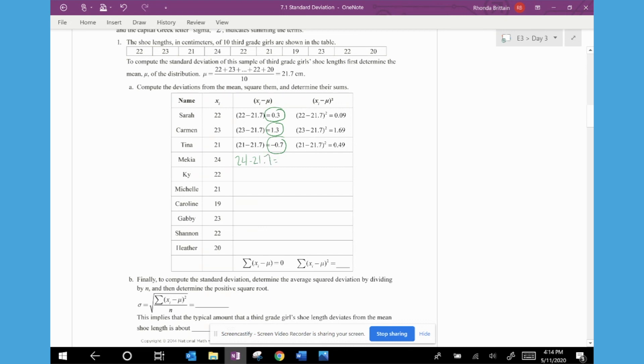So Micaiah is above the mean. And if I complete the first column, then I'm going to end up getting 0.3 for Kai, negative 0.7 for Michelle, negative 2.7 for Caroline, 1.3 for Gabby, 0.3 for Shannon, and negative 1.7 for Heather.